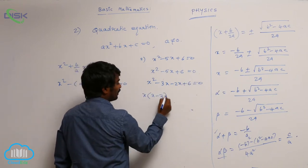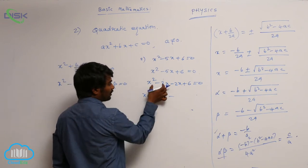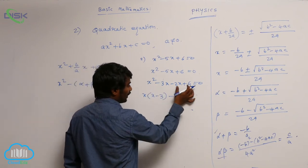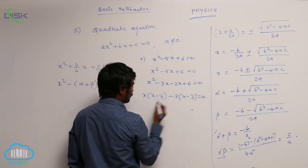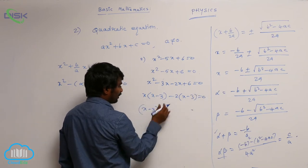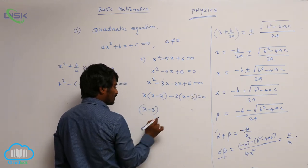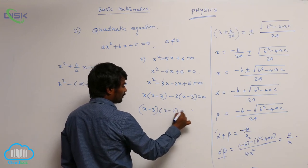So x minus 3x you take common from these two terms minus 2 you take common from these two terms x minus 3 equal to 0. So x minus 3 again you take common from these two terms you will be getting x minus 2 is equal to 0.